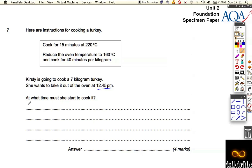Let's work out the cooking time. Cooking time equals 15 minutes to start plus 7 times 40 minutes, which is 15 plus 280 minutes, which equals 295 minutes. That's the total cooking time for the turkey. If you got that, that's worth two marks.